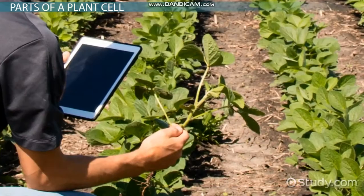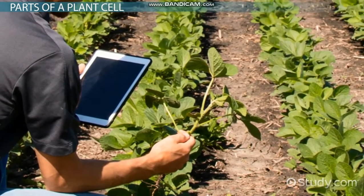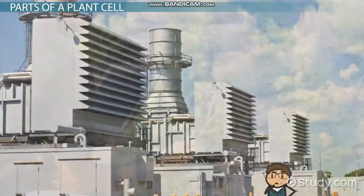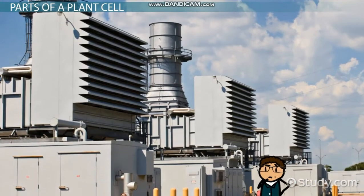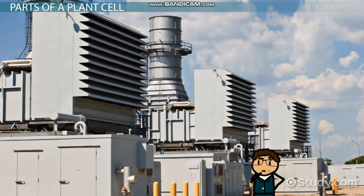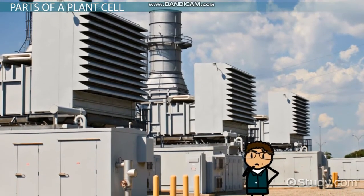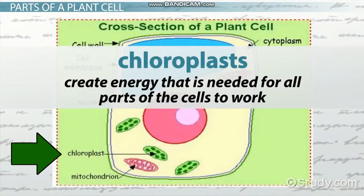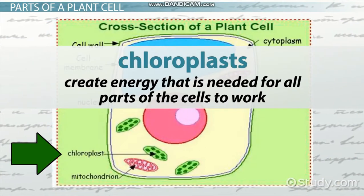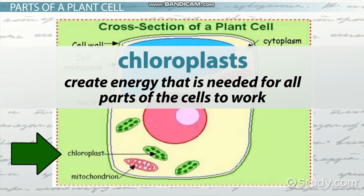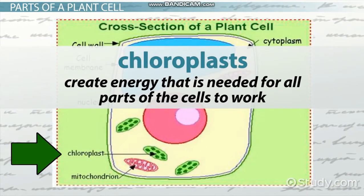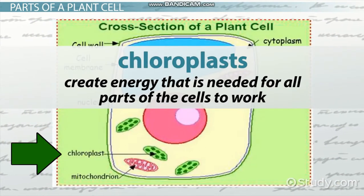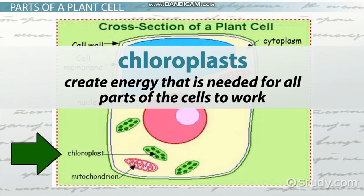Plant cells, unlike animal cells, also have chloroplasts. These are like the power plant that makes electricity for machines to work in a factory. Chloroplasts create energy that is needed for all parts of the cells to work. Chloroplasts are also what make parts of the plants green.